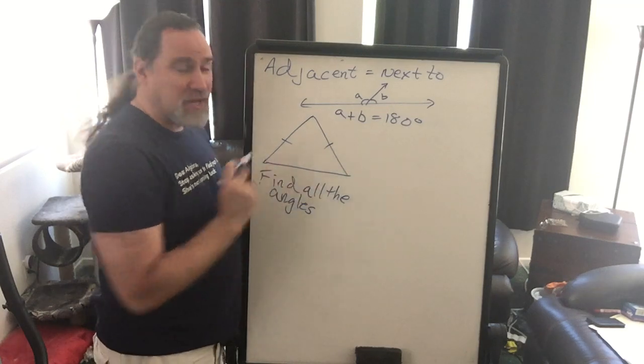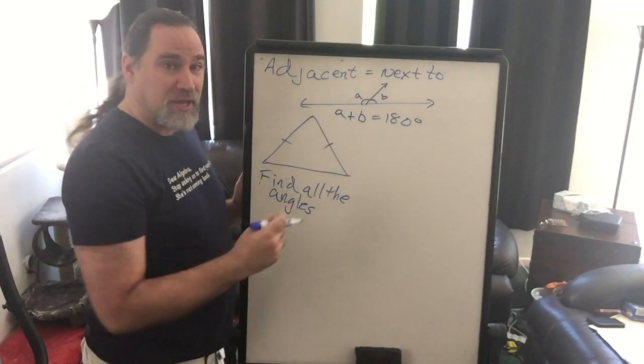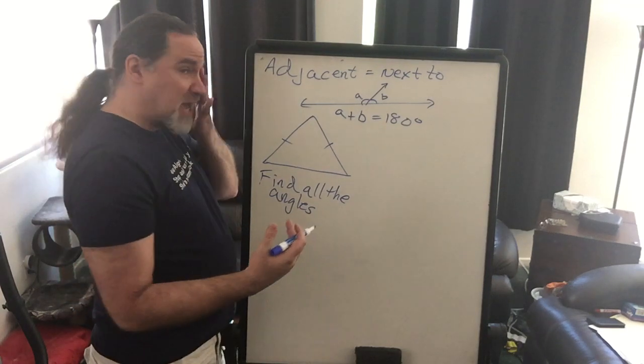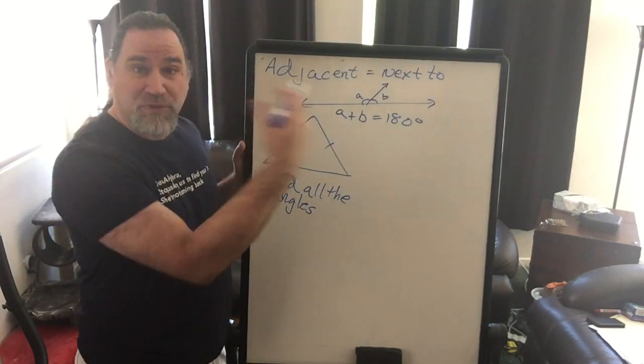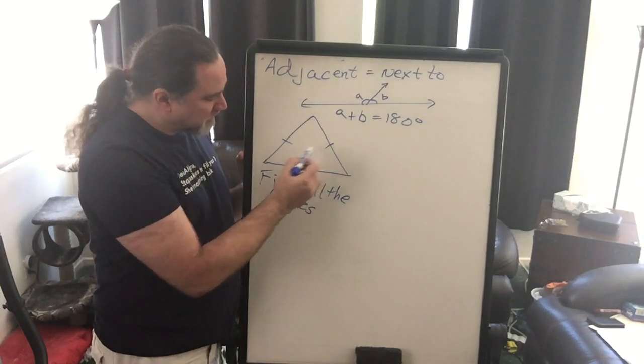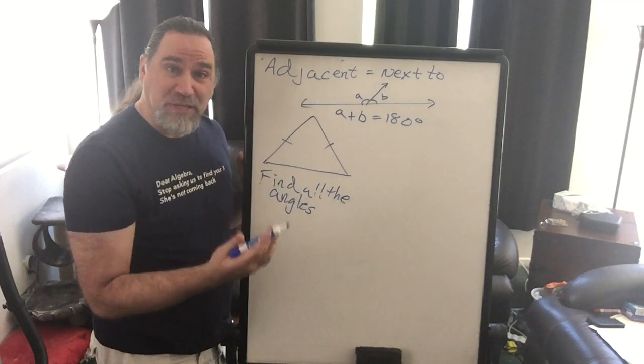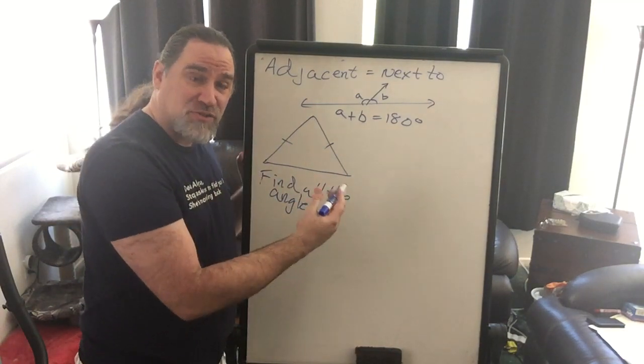They are the same length. And the interesting thing about that is when they have the same length, the angles that are across from them, meaning this angle here and this angle here, have to be equal. So if the sides are equal, then their angles opposite are equal.